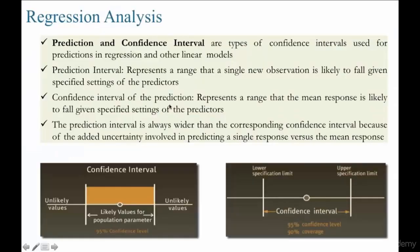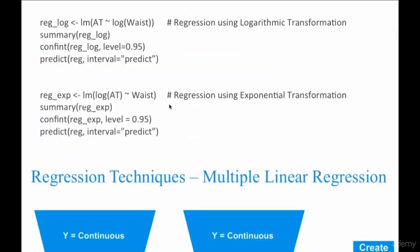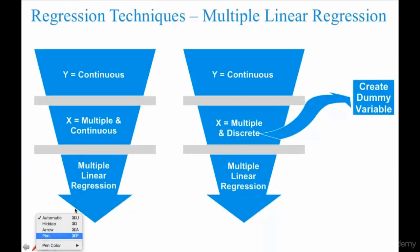Now let us resort to multiple linear regression model. If the output variable is continuous and if the input variables that you have are multiple and if all the input variables are continuous, then you simply proceed with multiple linear regression. But if the output variable is continuous and if you have multiple input variables which are discrete in nature, those discrete inputs should be converted to dummy variables and then you can proceed with your multiple linear regression.